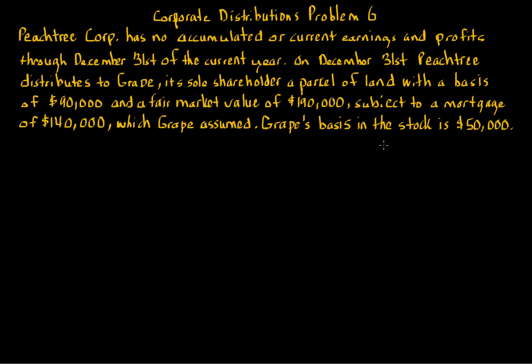In this problem, Peachtree Corporation has no accumulated or current earnings and profits through December 31st of the current year. On December 31st, Peachtree distributes to Grape, its sole shareholder, a parcel of land with a basis of $90,000 and a fair market value of $190,000, subject to a mortgage of $140,000, which Grape is going to assume. Grape's basis in the stock of Peachtree Corporation is $50,000. Grape is receiving a parcel of land that has a liability on it — a mortgage that Grape assumes. That's extremely important to understand in this problem.